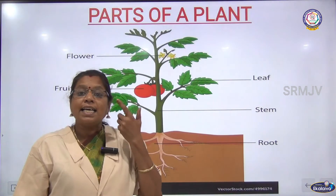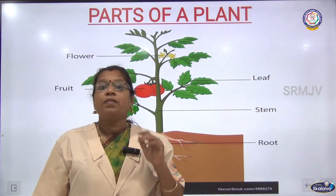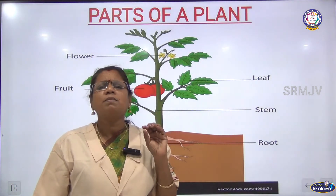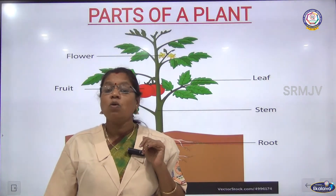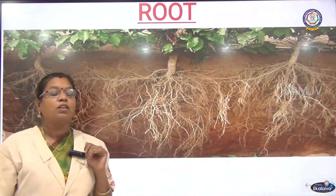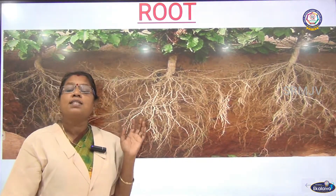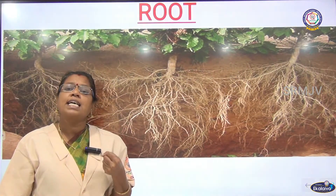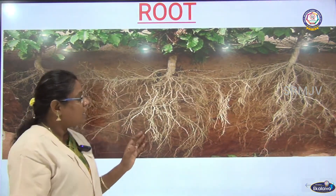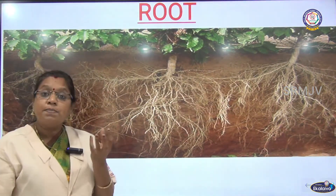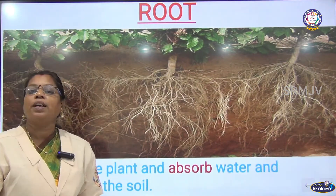Just as I can see with my eyes, these parts also perform specific functions for the plant. Let's see what they are. First, roots — roots help the plant to hold tightly in the soil. These roots absorb water and minerals from the soil.